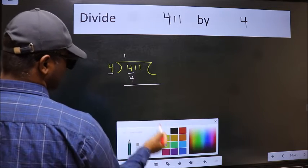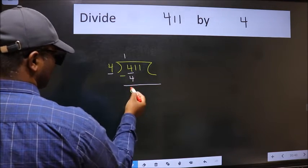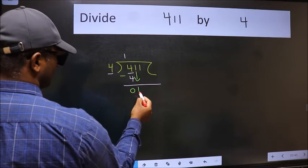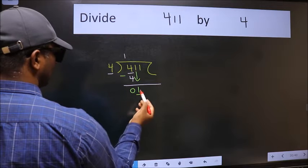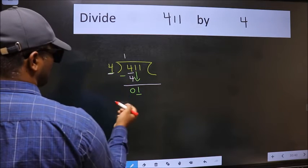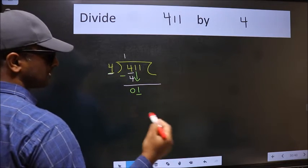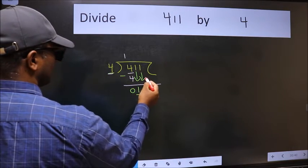Now we should subtract, we get 0. After this, bring down the beside number, so 1 down. Now here we have 1 and here 4. 1 is smaller than 4, so we should bring down the second number.